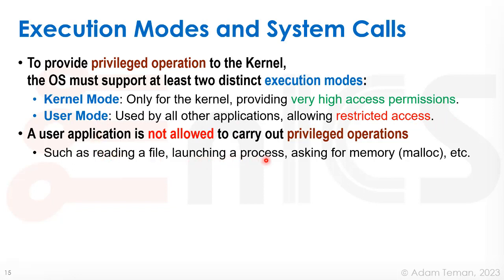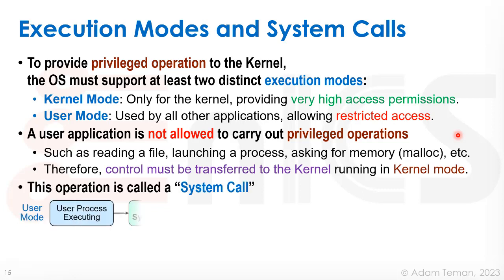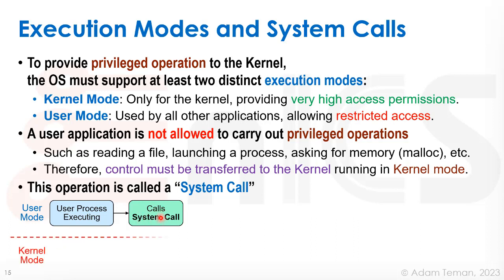Anytime a user application wants to do a privileged operation, it has to call the kernel. Things like reading a file, launching a process, or asking for memory with malloc — a user is not allowed to do those directly. Those are privileged operations, and therefore control must be transferred to the kernel running in kernel mode. This is called a system call. A process is running in user mode, doing its thing, and all of a sudden wants to do something — say it wants to read a file. It cannot read a file; that's a privileged operation.